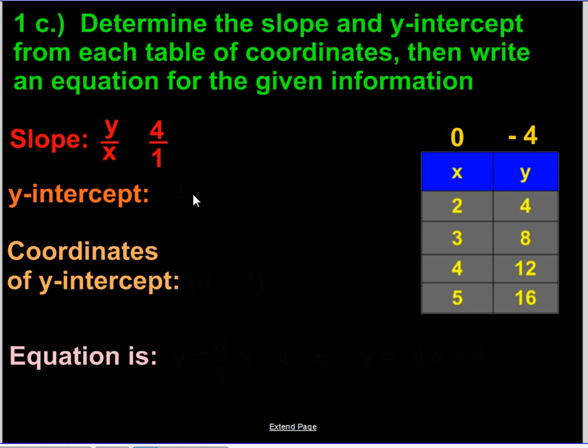So our y-intercept is negative 4, and the coordinates are simply what we have right here, 0, negative 4.